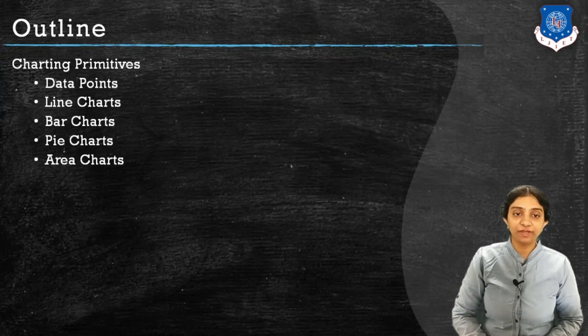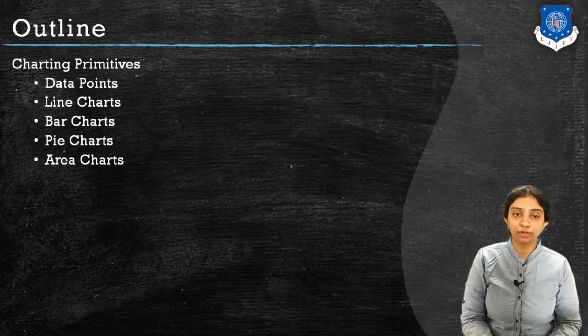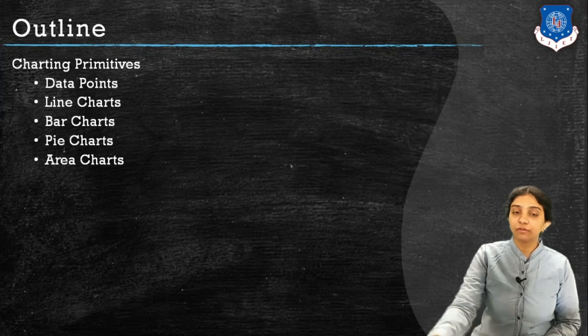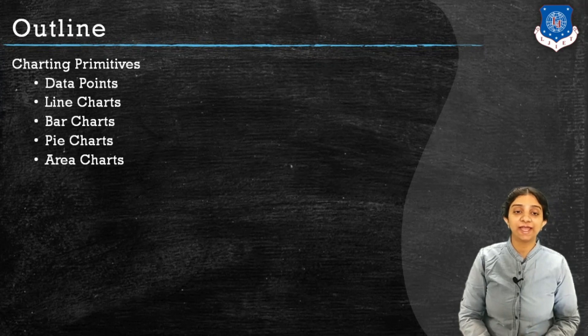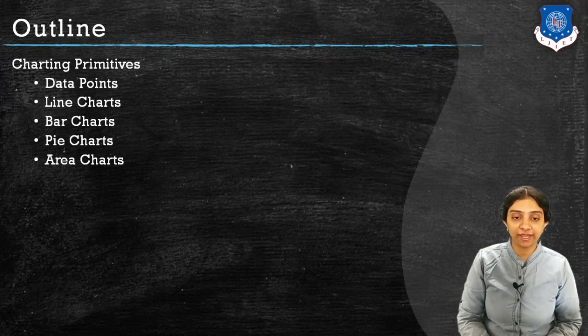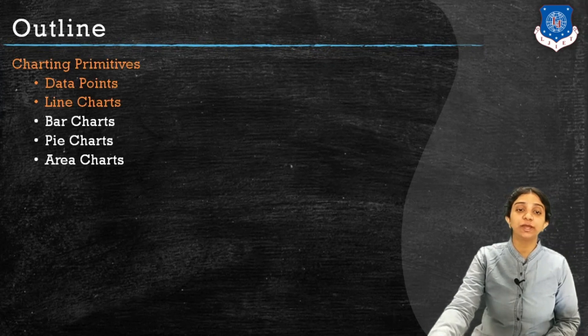Hi, in today's video lecture we are going to cover charting primitives. Basic charting primitives are five: data points, line charts, bar charts, pie charts, and area charts, out of which we are going to only cover data points and line charts in detail.